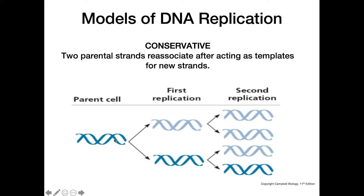What that would look like is we have this original strand right here, and so these two strands would pull apart and each would act as a template for a new strand, but then the old strands would come back together and the two new strands would go together to make different molecules. That's how they thought at first that DNA replication might be taking place.